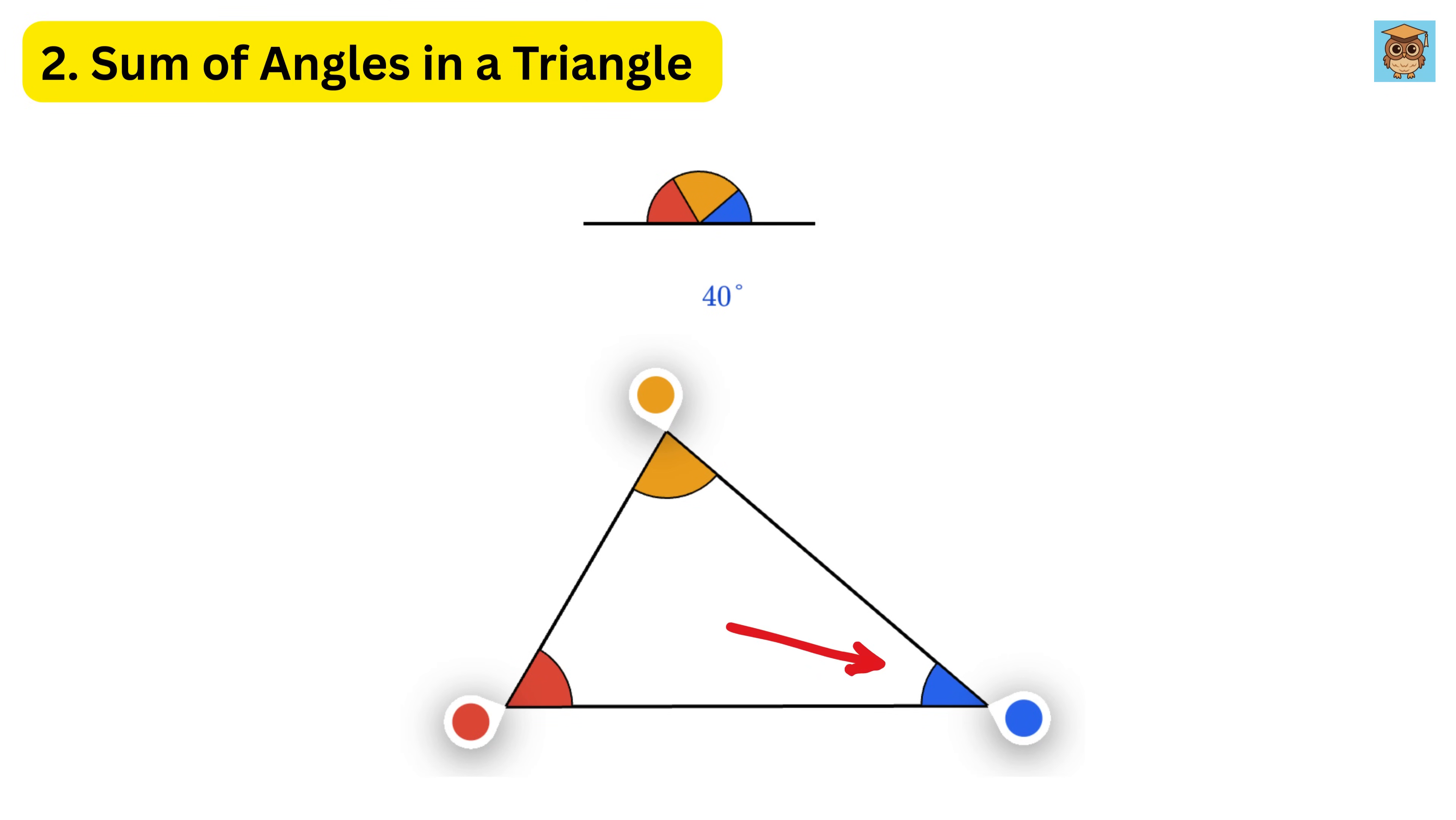For example, if this angle is 40 degrees and this is 60 degrees, then this angle, let us call it x, plus 40 plus 60, will be equal to 180. This means x equals 180 degrees minus 40 degrees minus 60 degrees or 80 degrees.